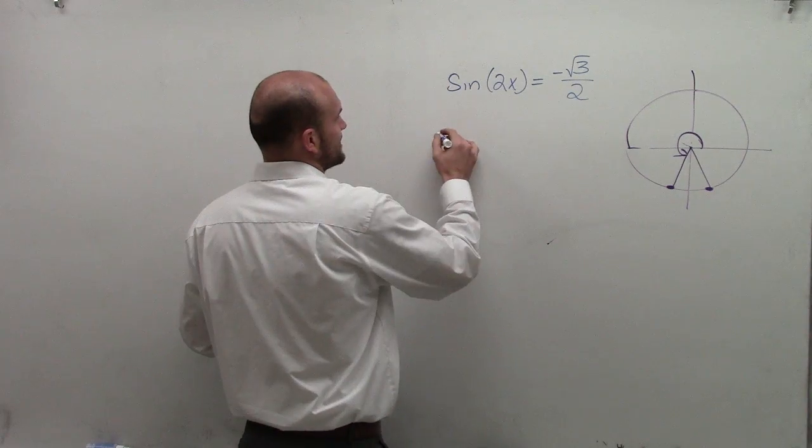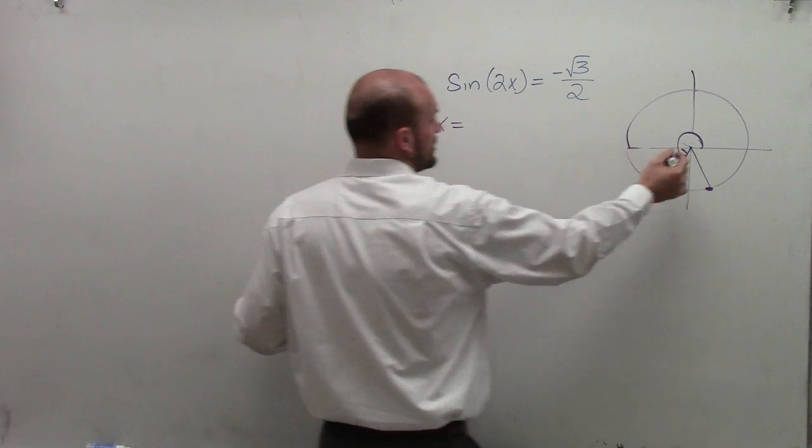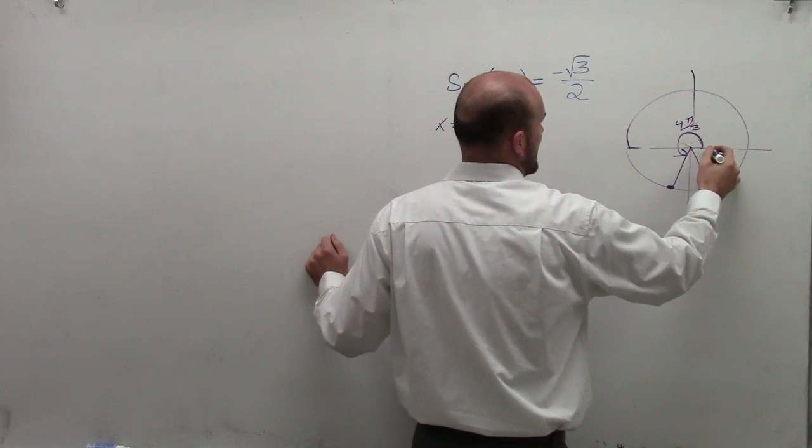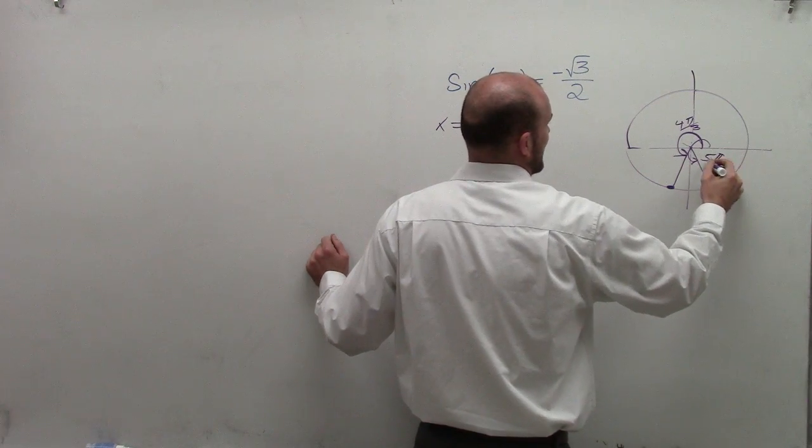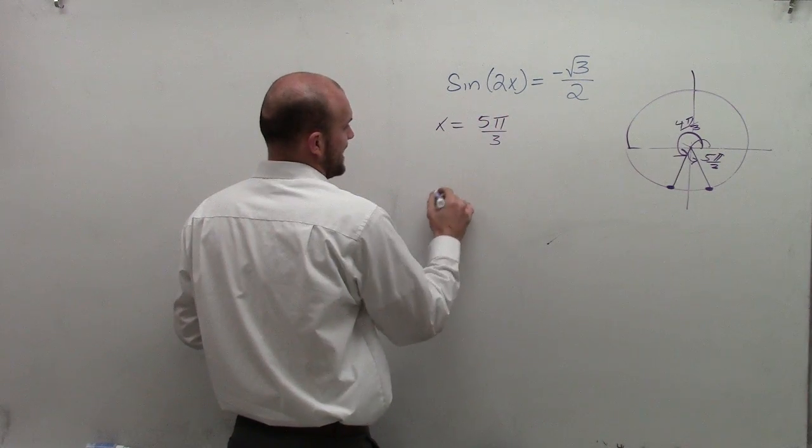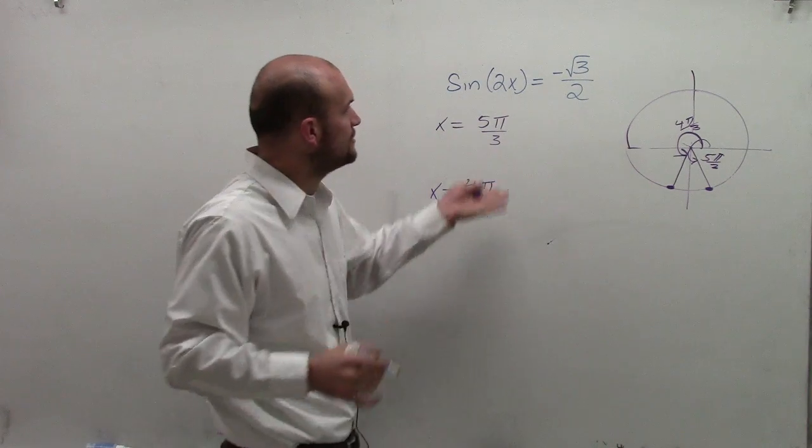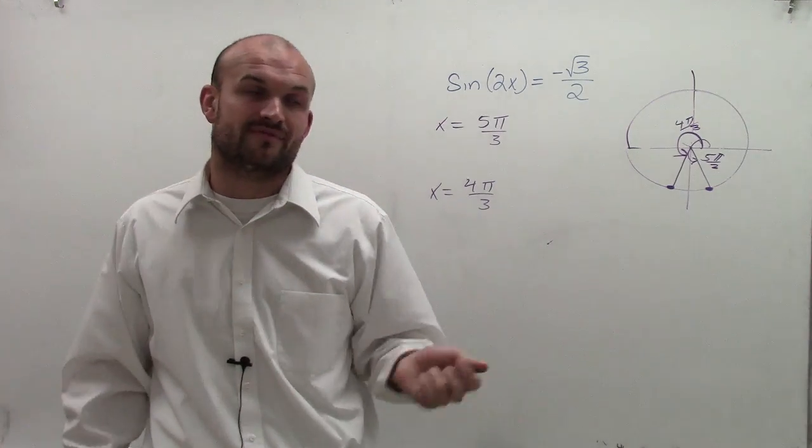So we're going to have, we could say x equals the angle. This first angle we're going to call is 4 pi over 3. And then the next angle is going to be 5 pi over 3. So we could say x equals 5 pi over 3 and x equals 4 pi over 3. So those are the two angles when I take the sine of an angle and it's equal to a negative square root of 3 divided by 2.